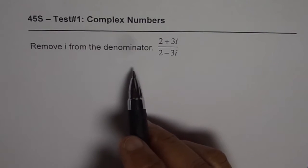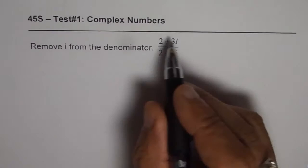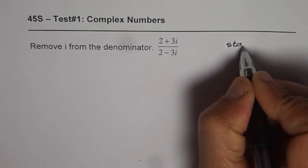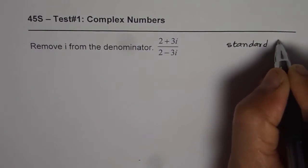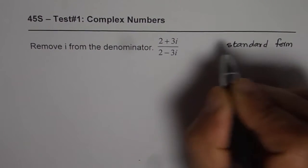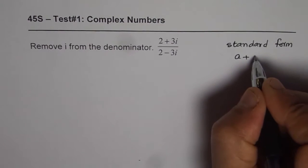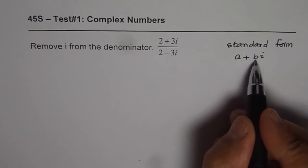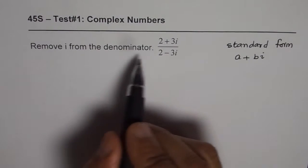This question may sometimes be asked as to write this expression in standard form. So that could be another way of asking the same thing. Now, standard form for a complex number is a plus bi, where a is the real part and b is the imaginary part. Now, to remove it, we need to rationalize the number.